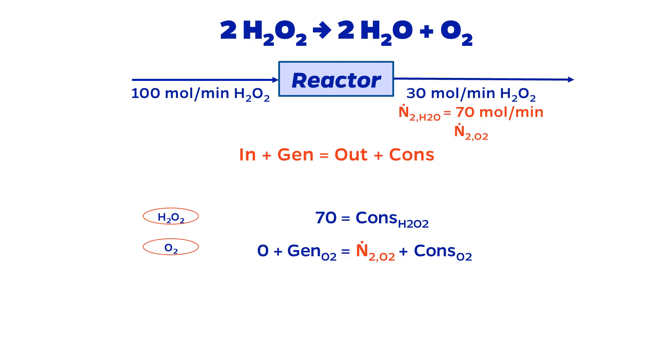The oxygen balance is 0 moles per minute plus generation of O2 equals N dot O2 plus consumption of O2. Again, oxygen is not consumed because it is only a product. Thus, the exit flow rate of oxygen is equal to the generation rate of O2.